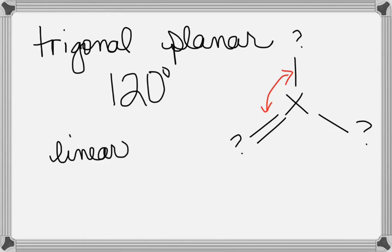If it's linear, what's the bond angle going to be? 180. So of those three bond angles, really the only new thing you've got to learn is the 109.5, because that one's a little different. But you can figure out the 120 and you can figure out the 180.